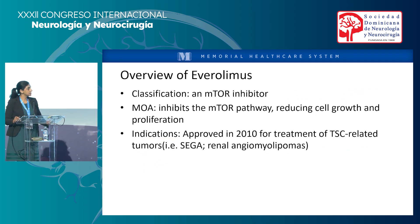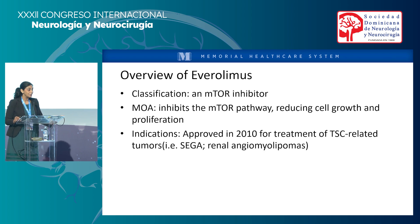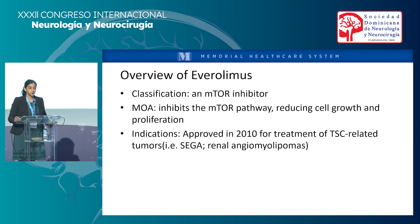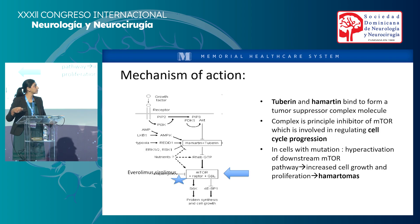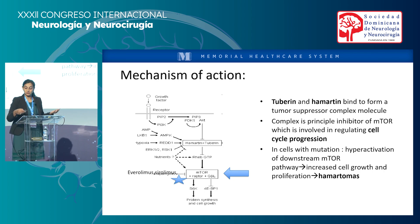Here's an overview of everolimus. This is one of the main initiatives for my clinic because I feel strongly about everolimus — I've been using it on some of our children. You can't use it until the age of one, but it's really helped prognosis and slowed down the disease process. The mechanism of action of everolimus inhibits the mTOR pathway, reducing cell growth and proliferation. It was approved in 2010 for treatment of SEGA and renal angiomyolipomas. The thought is that by inhibiting the mTOR pathway, you're not allowing cell growth, slowing down the progress and helping from a seizure standpoint as well.